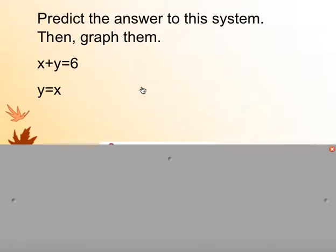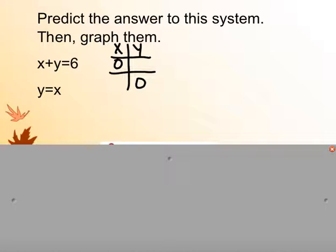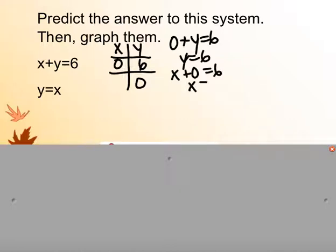For x plus y equals 6, I'll create an x-y table with 0 and 0. Whenever I have standard form — both variables on the left side — I use my y-intercept and x-intercept chart. If I plug in x as 0, then y equals 6. And if I plug in y as 0, then x equals 6.